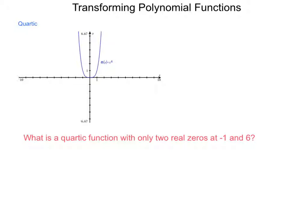Well, if we have two real solutions, or two real zeros at negative 1 and 6, that means two of the factors, and we'll call this function f of x, two of my factors are going to be x plus 1 and x minus 6. That way, when I substitute in these zero values into my equations, or my terms, I will get zeros.